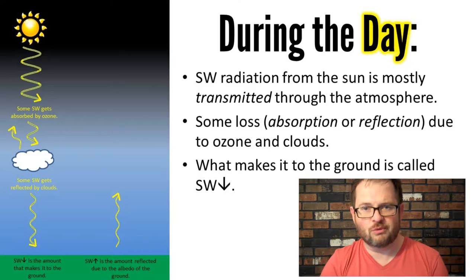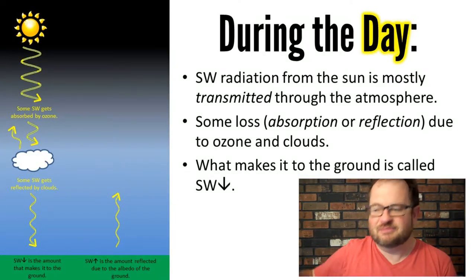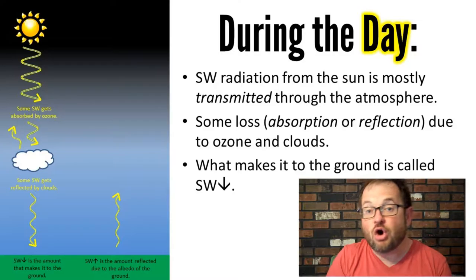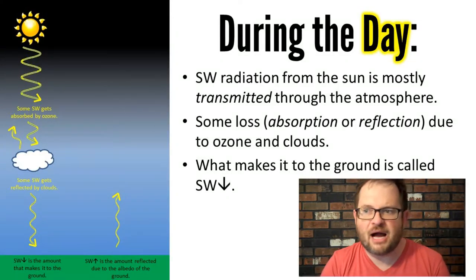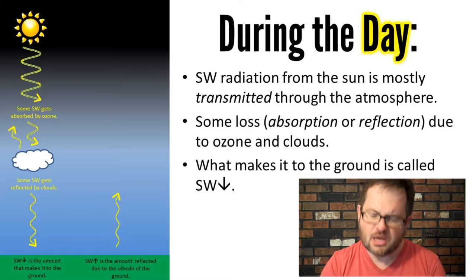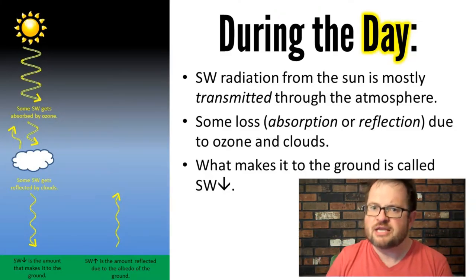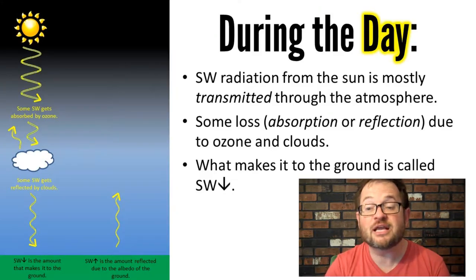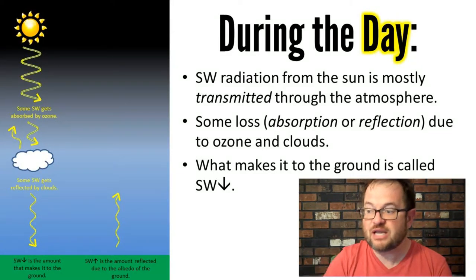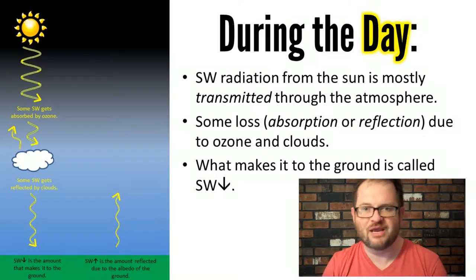Clouds are really good at reflecting shortwave radiation back into space — energy that traveled 94 million miles from the sun but never warmed the Earth at all. There's also some loss from reflection by dust and aerosols, and a little absorption by trace gases. But by and large, most of that shortwave radiation makes it all the way to the ground. The quantity of shortwave radiation that reaches the ground is the number we call SW down, or shortwave down — measurable with an instrument at the surface.